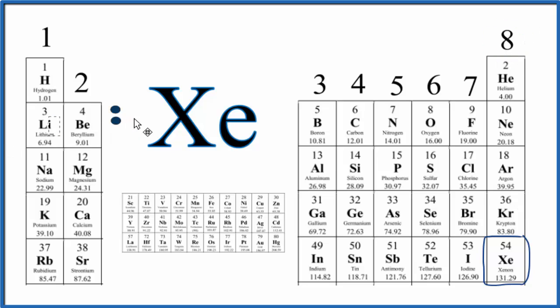So we'll put them around Xe. We'll put pairs of electrons around the element symbol. And this is the Lewis structure for Xe.